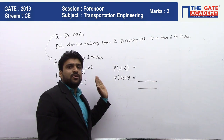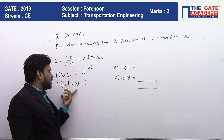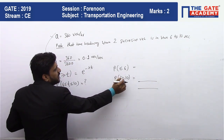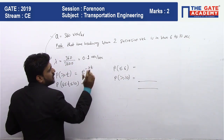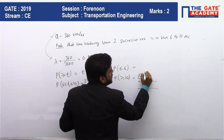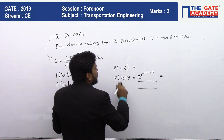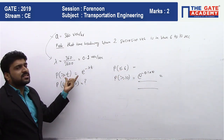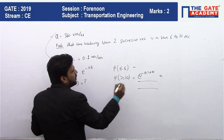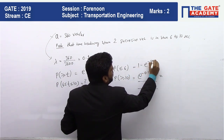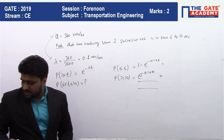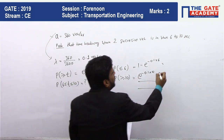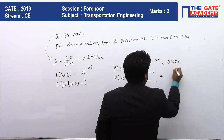We will find these probabilities and subtract from one to get our answer. Probability greater than 10 seconds: e to the power of negative lambda times t = e^(−0.1 × 10) = 0.3678. Probability less than 6 seconds: one minus e^(−lambda × t) = one minus e^(−0.1 × 6) = 0.4511.